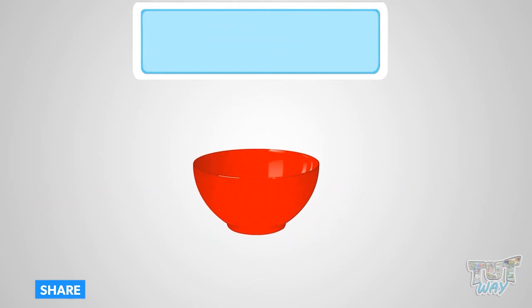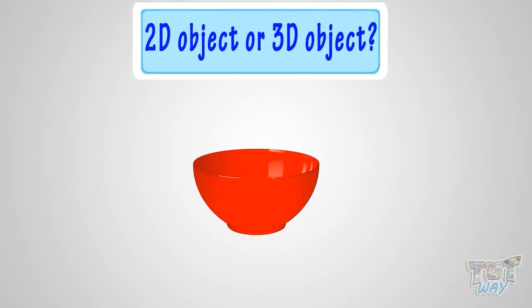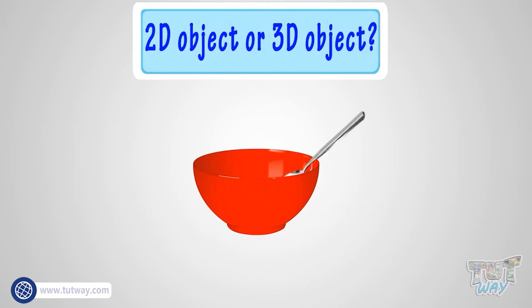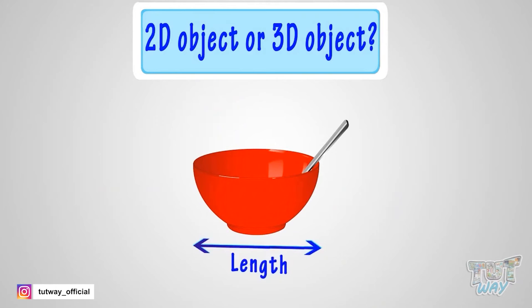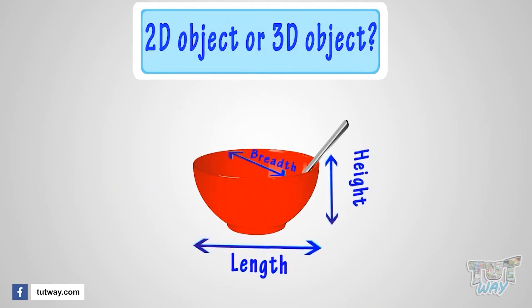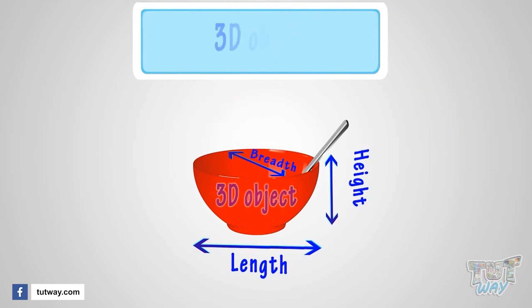Here we have another object. We have to tell: is it a 2D object or a 3D object? Can we put something in this object? Yes. And how many dimensions does it have? It has length, it has breadth, and it has height too. So, it's a 3D object.